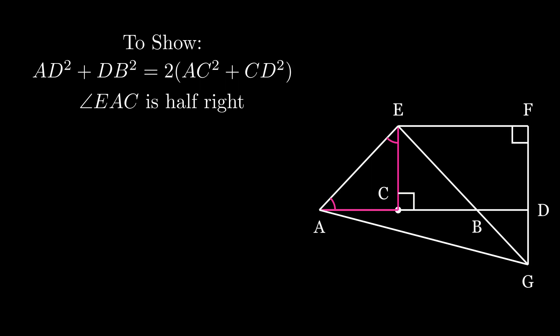So individually they are half of a right angle each. Similarly, angle CEB and angle EBC are half of a right angle. We have therefore found that angle AEC plus angle CEB is a right angle. Since angle EBC is half of a right angle, we know that angle DBG is also half of a right angle. But we also know that angle BDG is a right angle, so angle BGD must also be half of a right angle. Therefore triangle BDG is an isosceles triangle, so BD will be equal to DG.